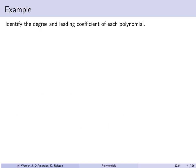Let's identify the degree and leading coefficient of a few polynomials. For f(x) = 2x − 3, the highest power of x is x¹, which is multiplied by 2. So the degree is 1 and the leading coefficient is 2.